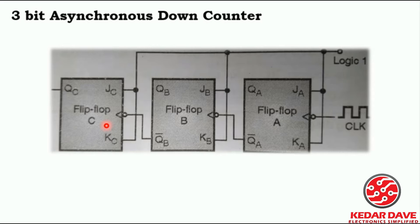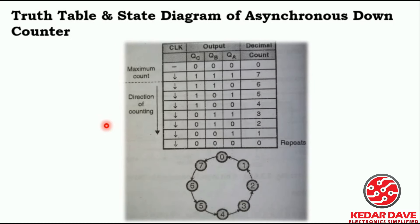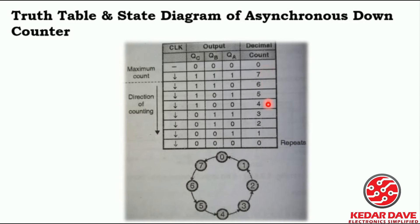It will count up to 7. This will be the output of this particular counter, as we have seen and understood in the figures. Here you can see the full output: first that is 7, then 6, and in this way it decreases one by one, counting all the way down to 0. After 0, it will start repeating again from 7 to 1.